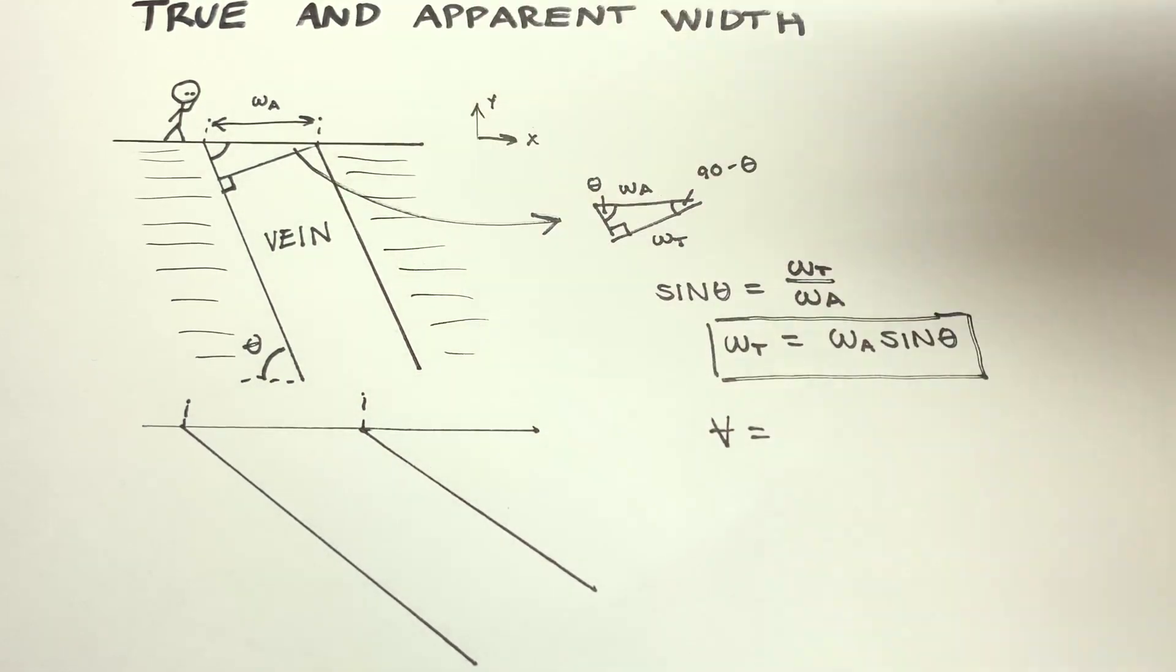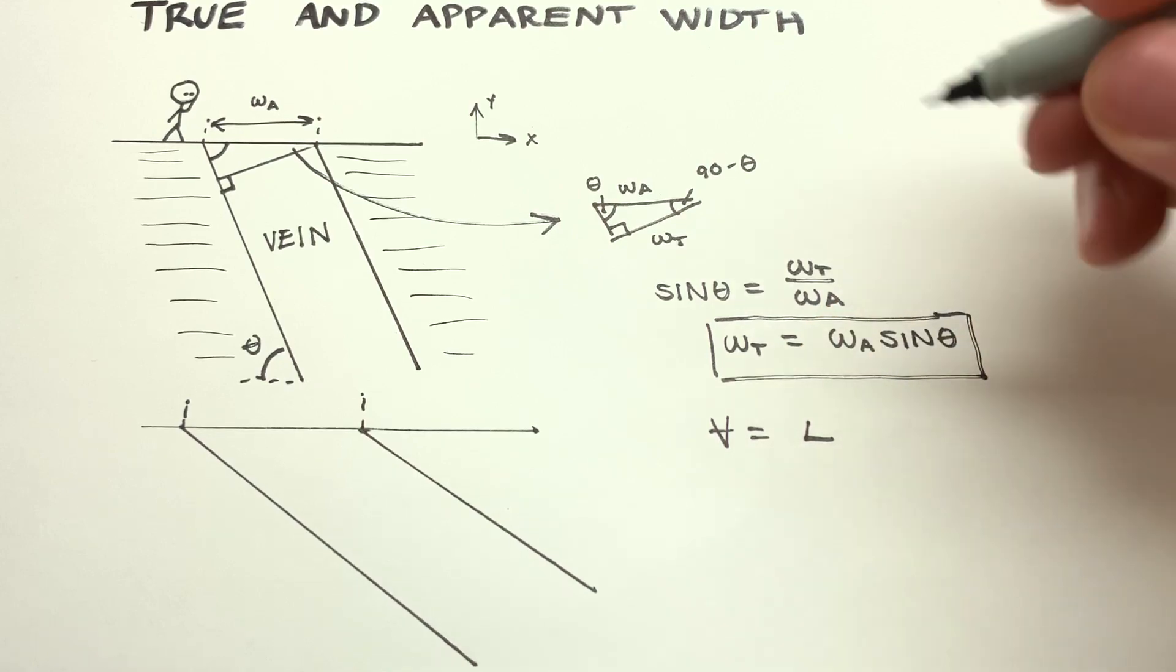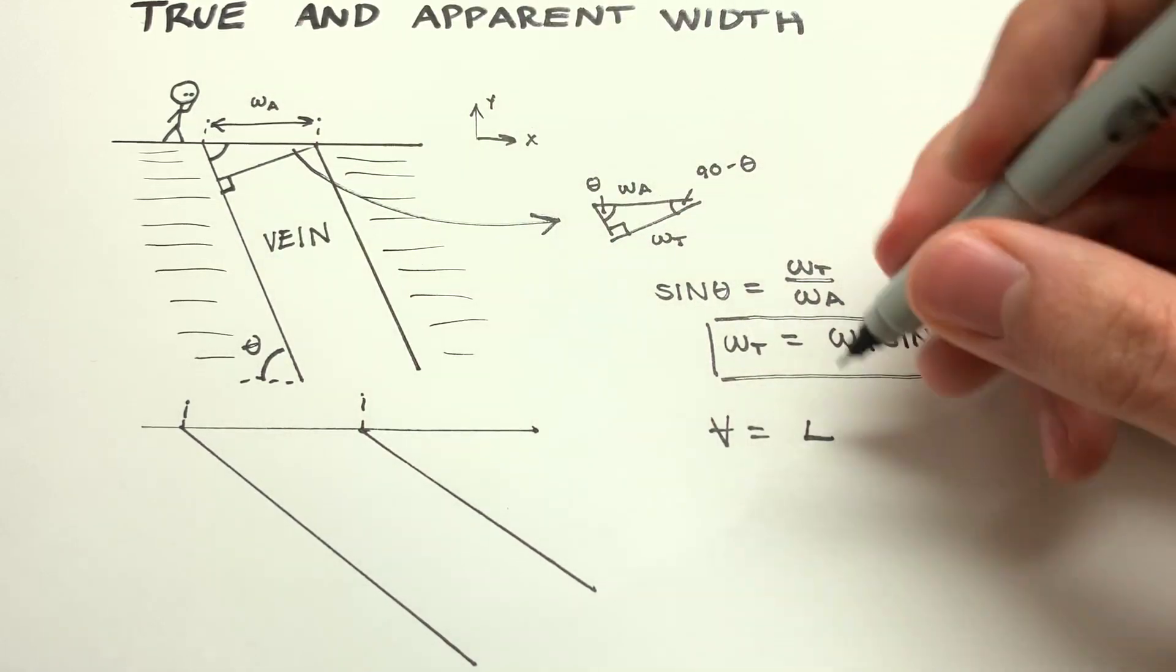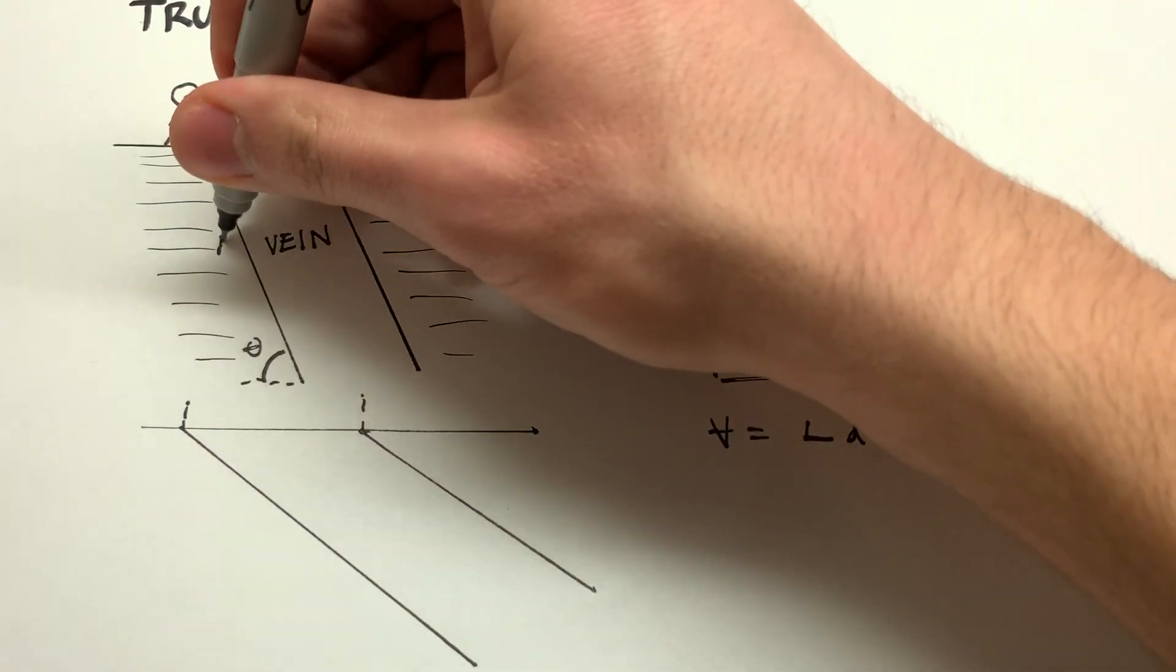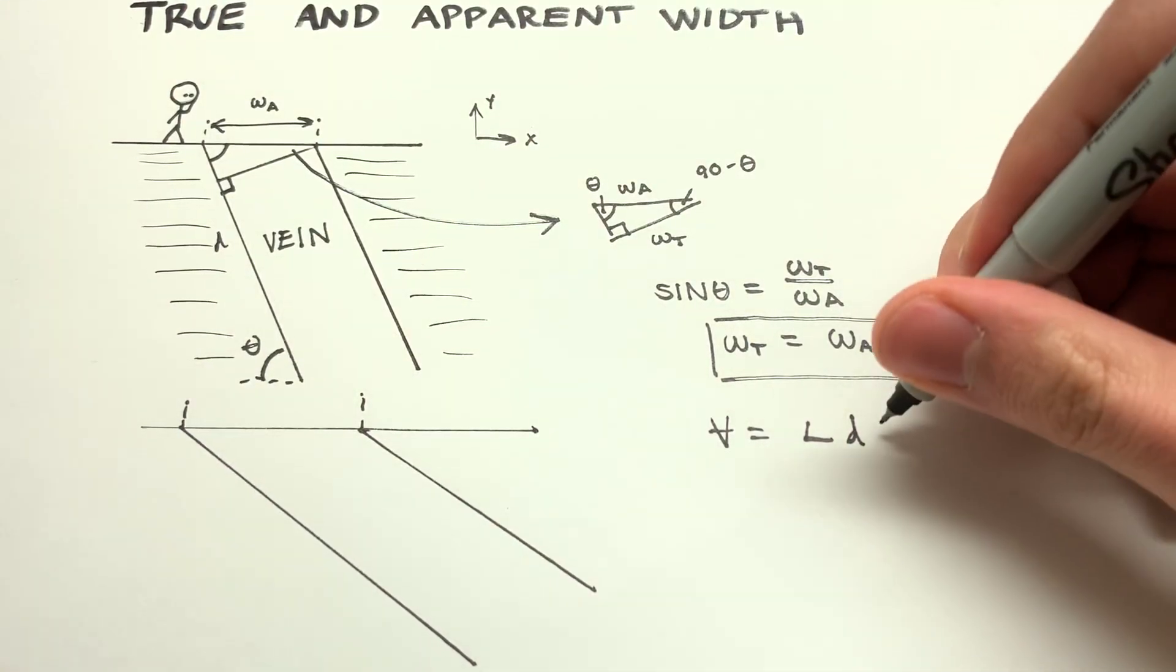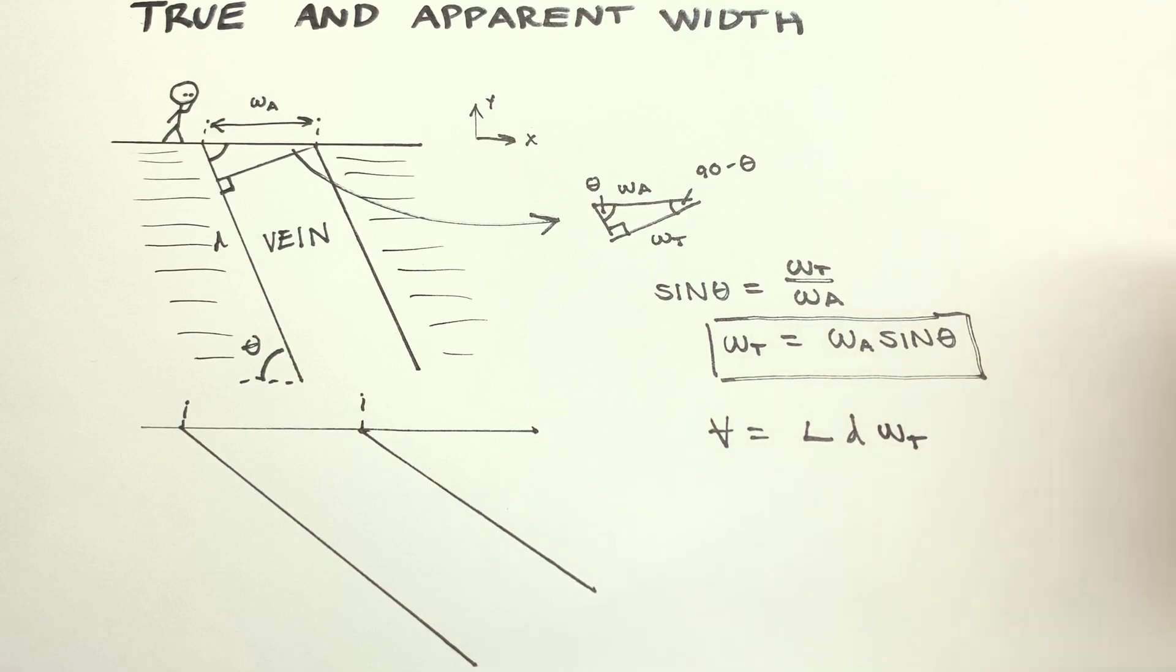If we have the volume, then we might say the strike length, which is into the page, we might call that L. The dip length, which we might call, oh shoot, what might we call that? D. That's along there. Multiplied by then the true width, not the apparent width. The apparent width will give you an overestimate in that case. And that's bad when there's money involved. You don't want investors thinking you've got more money than you actually do because then they'll get angry at you and then you're in deep trouble. You end up like Bree-X. That's no fun.